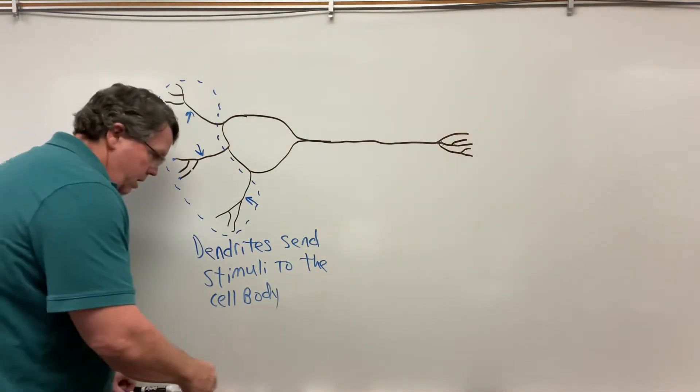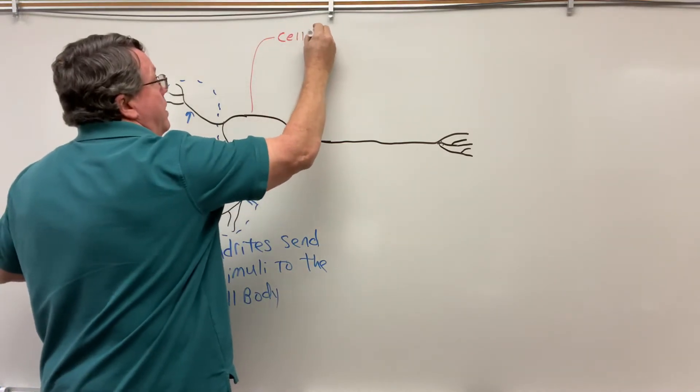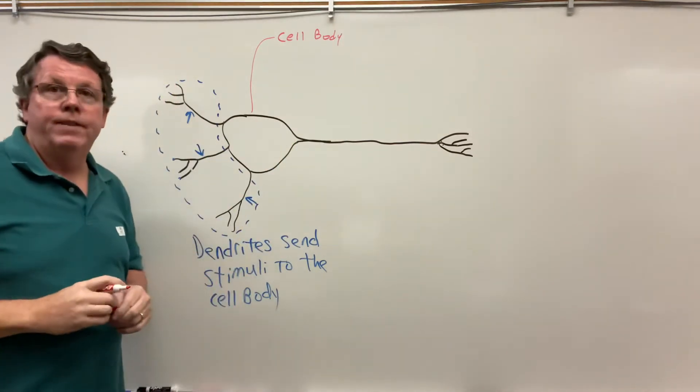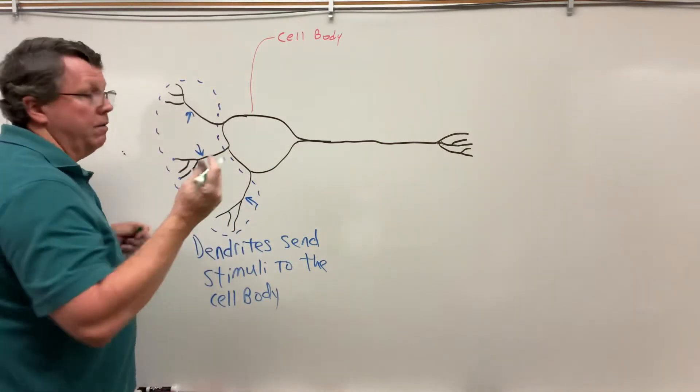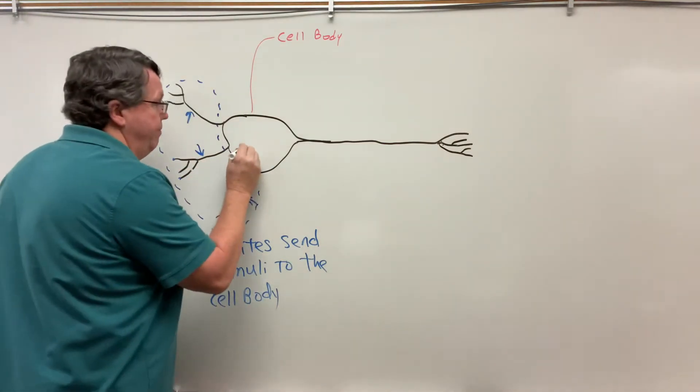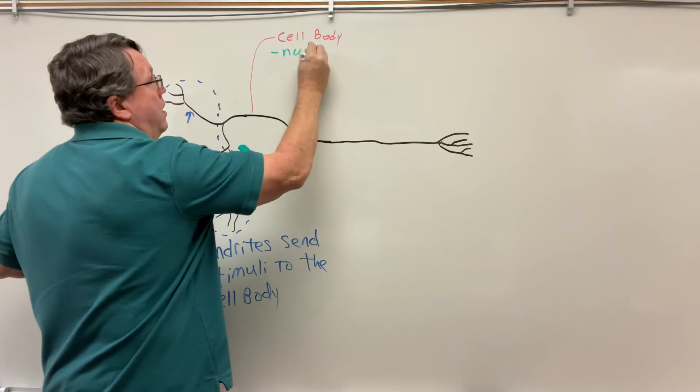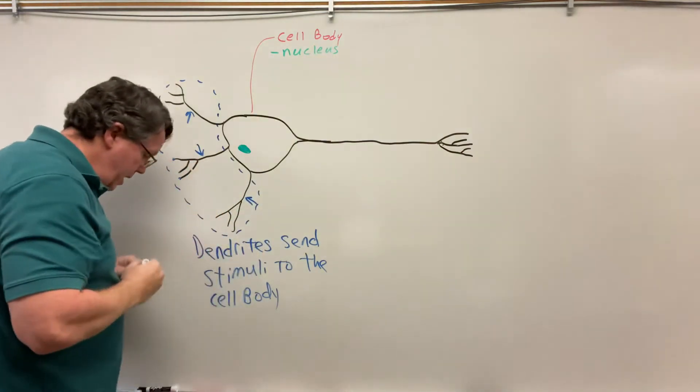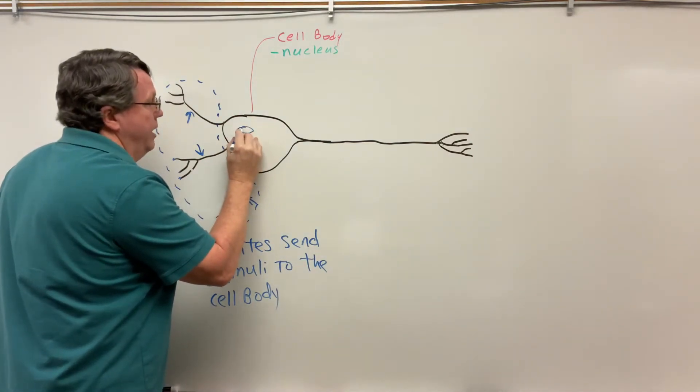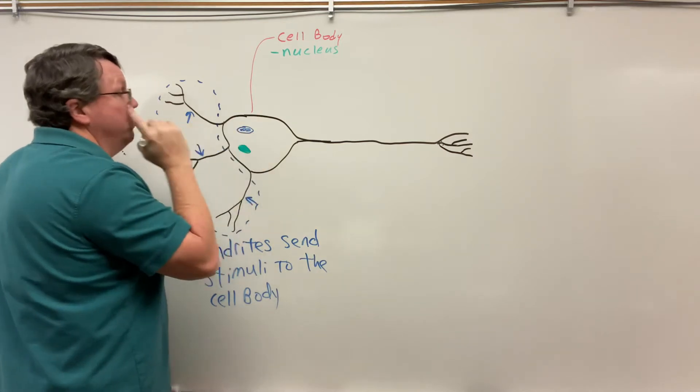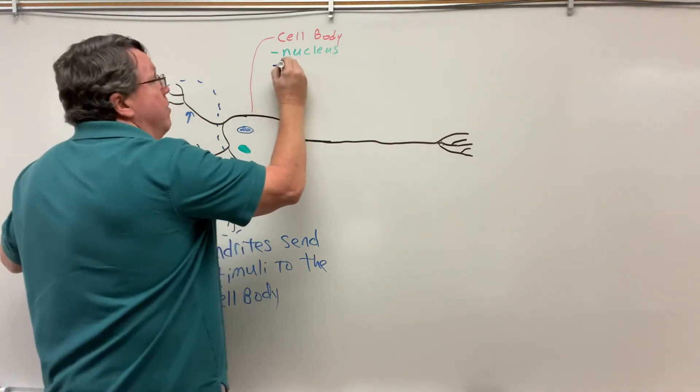Now we have the cell body. In my cell body, we have different things in there. For example, like all cells, we're going to have a nucleus on the inside. And then the other big one that we're going to have in here are mitochondria. Remember mitochondria is responsible for making energy.